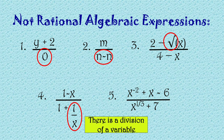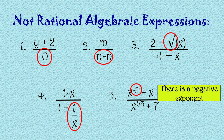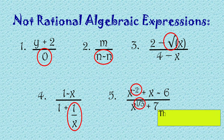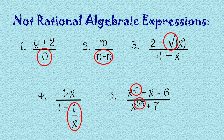Number 4, there is a division of a variable — may fraction ulit tayo, tas may fraction pa ulit, so hindi na sya polynomial. Number 5, meron syang negative exponent at meron din syang fractional exponent, so hindi na yan polynomial, hindi na sya ratio ng dalawang polynomials. Yan po yung mga examples ng not rational algebraic expressions. Alam nyo na yung pinagkaiba ng rational algebraic expressions sa hindi rational algebraic expressions.